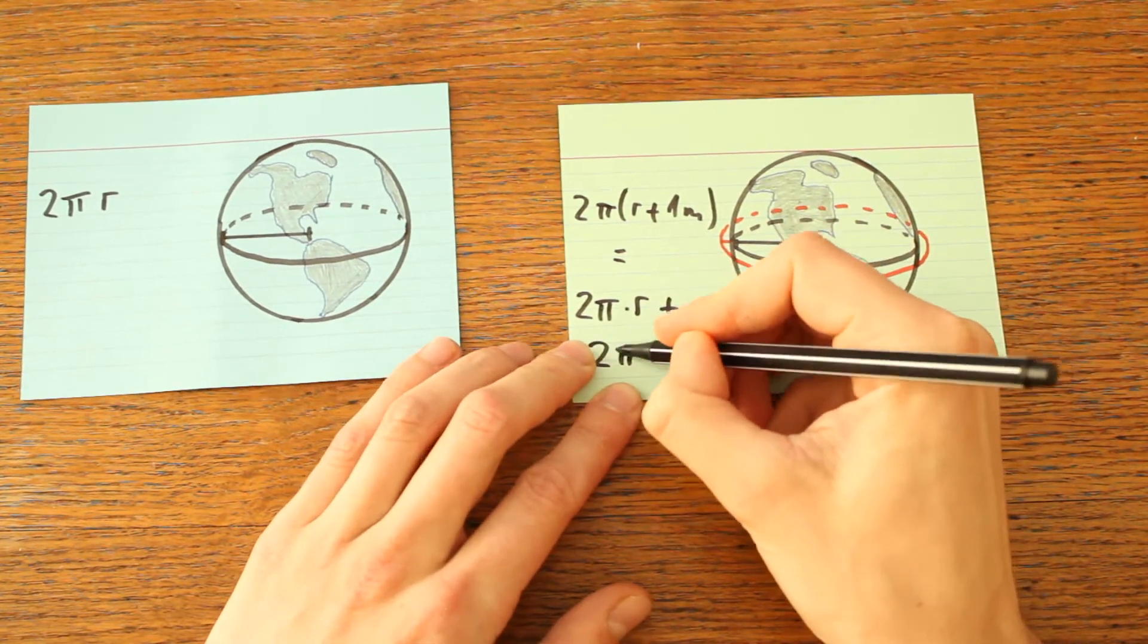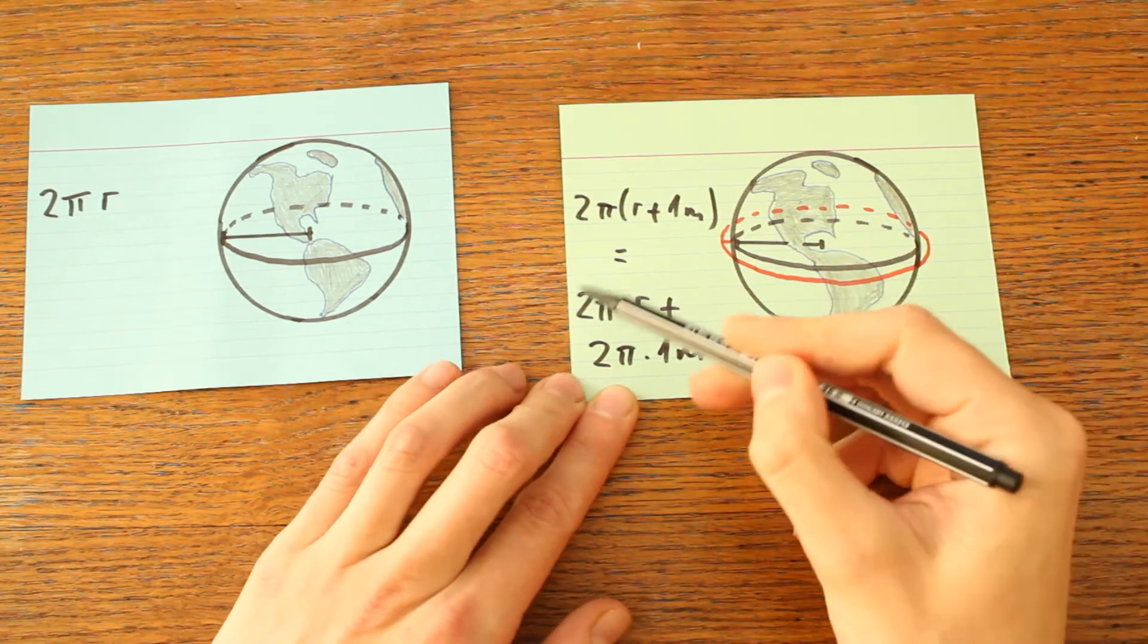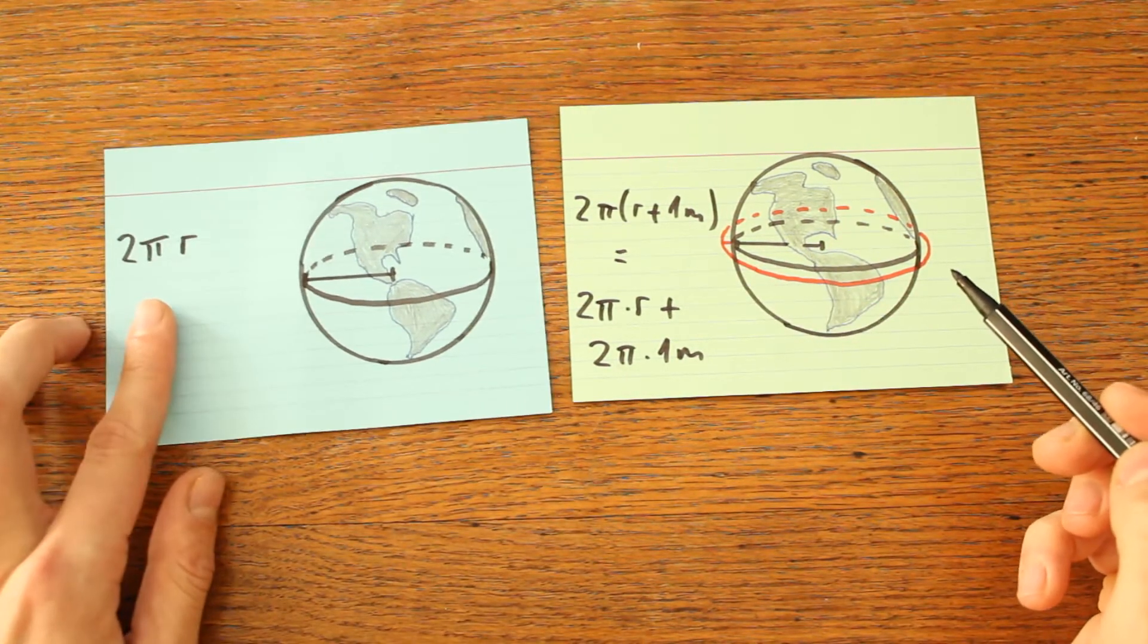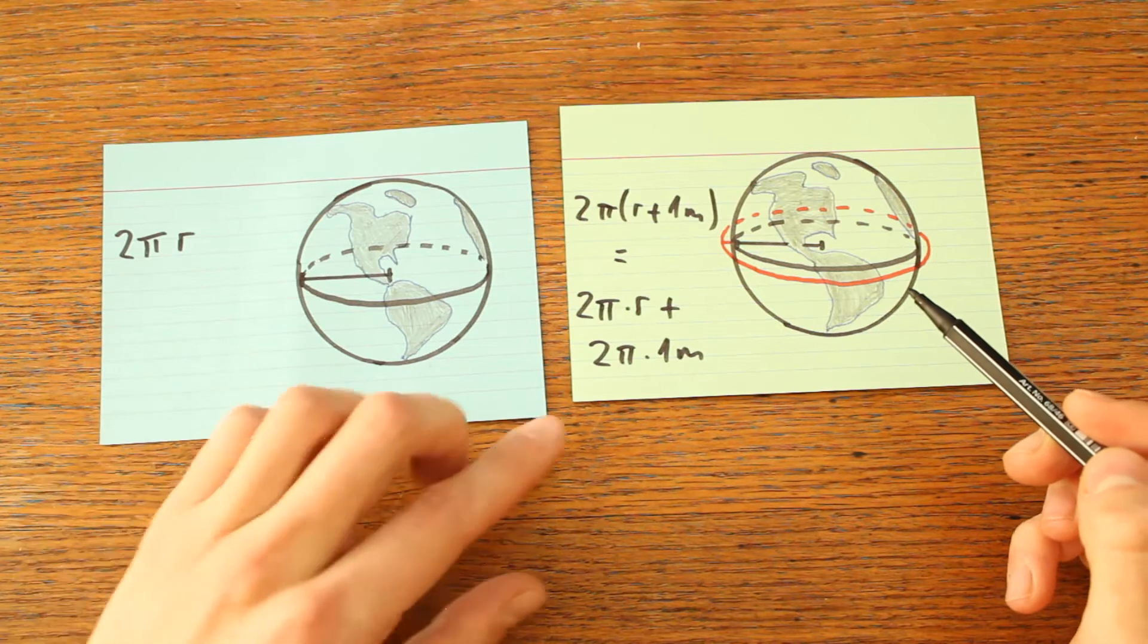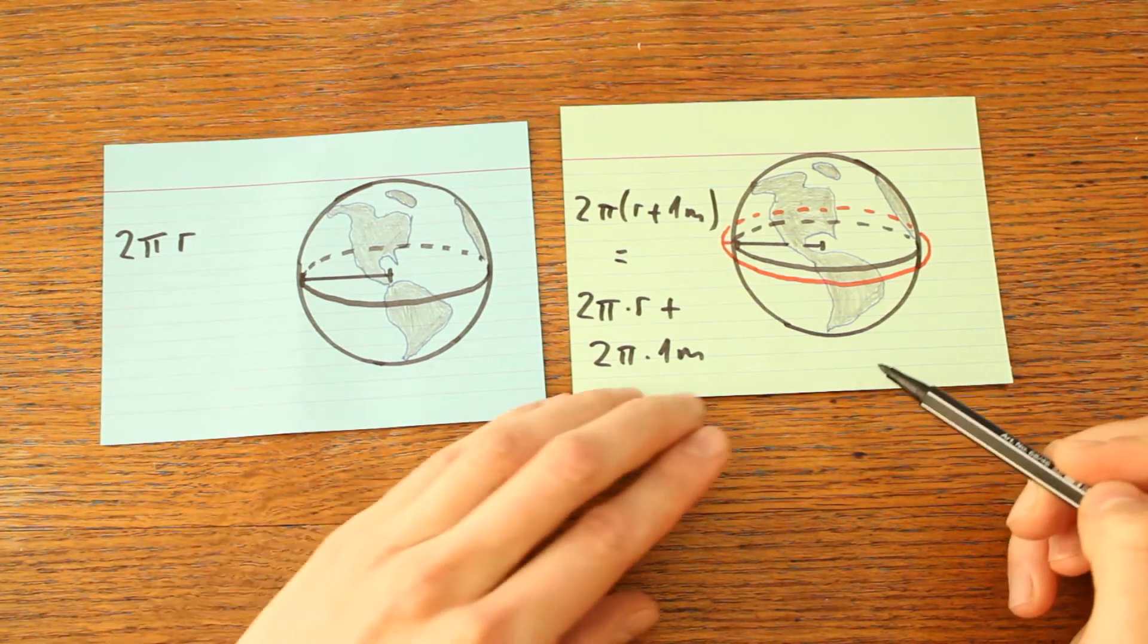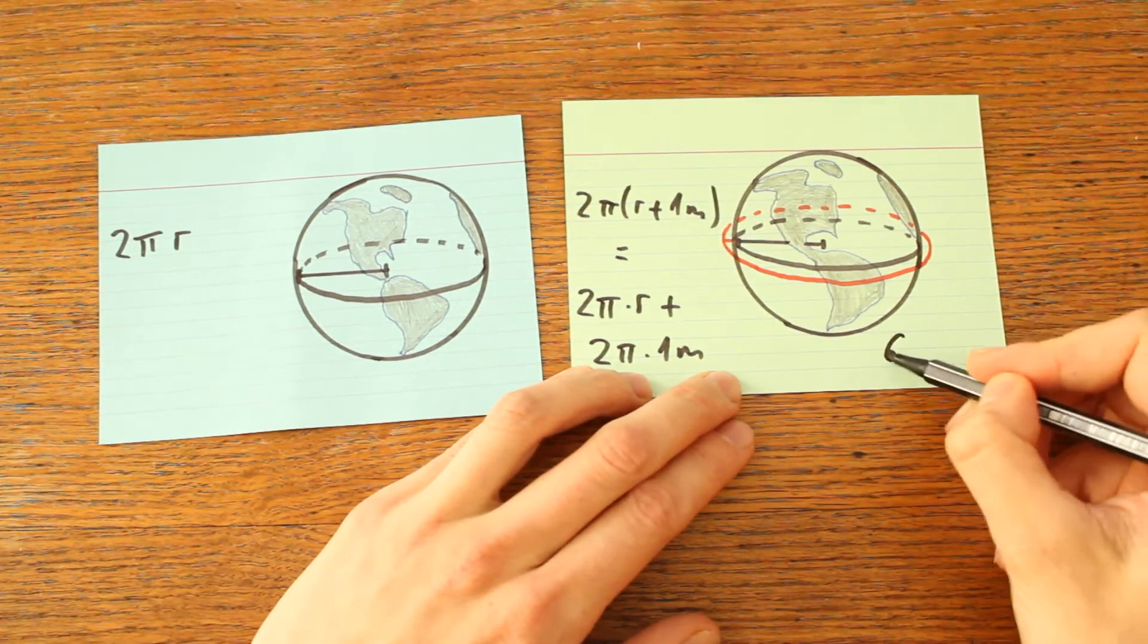Now we see that the first part that's just the same, 2 times pi times r, and then the second part that's 2 times pi times 1 meter, that's round about 6.28 meters, something like 21 feet.